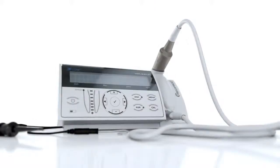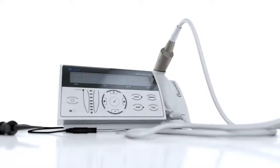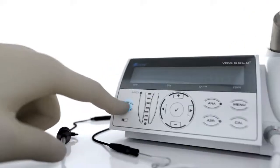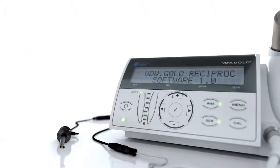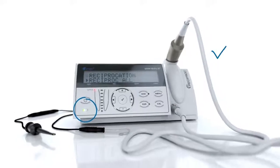To start your VDW Gold Reciproc, press the power key. You can find this key above the battery icon. When the battery symbol lights green, the motor is ready for use.